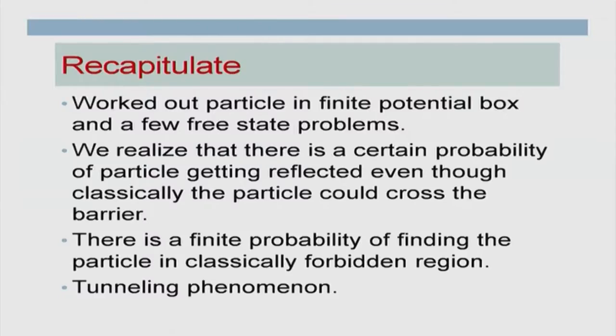This will be my last lecture on the quantum mechanics portion. Let us discuss what we have done in the last lecture. We worked out particle in a finite potential box, then we discussed some of the free state problems. One of the most important results is that there is a certain probability for a particle to get reflected even though classically the particle could not have crossed the barrier. There is also a finite probability of finding the particle in a classically forbidden region.